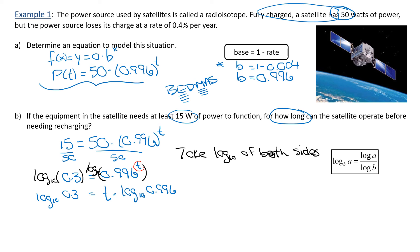Now T looks like it's at the front — it's going to be a real number. I want to isolate it, so I'm going to divide both sides by log base 10 of 0.996. These two cancel out, and I have T isolated. Since I have log base 10, I can use my calculator. Calculate log base 10 of 0.3 over log base 10 of 0.996, and you should get approximately 300.39. That's what T is.